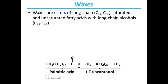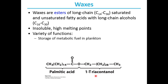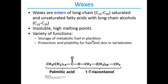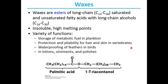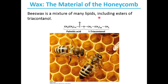Biological waxes are esters of long-chain saturated and unsaturated fatty acids with long-chain alcohols, as shown in the structure here. They are insoluble and have high melting points. Their functions include storage of metabolic fuel in plankton, protection and pliability for hair and skin in vertebrates, waterproofing of feathers in birds, and use in lotions, ointments, and polishes. Beeswax is a mixture of many lipids; triacontanyl palmitate, the molecule shown here, is a major component and is an ester of palmitic acid with the alcohol triacontanol. The beeswax of the honeycomb is firm at 25°C and completely impervious to water.